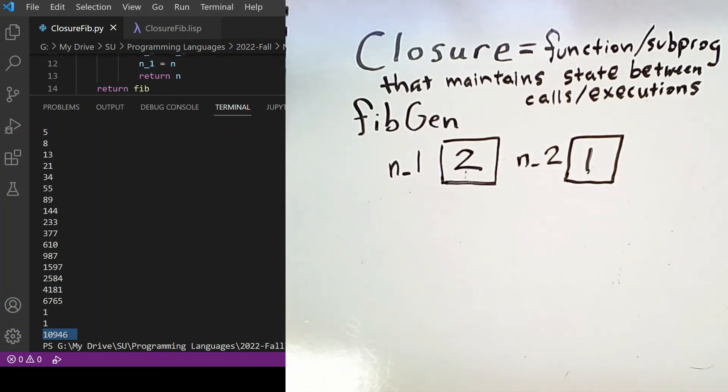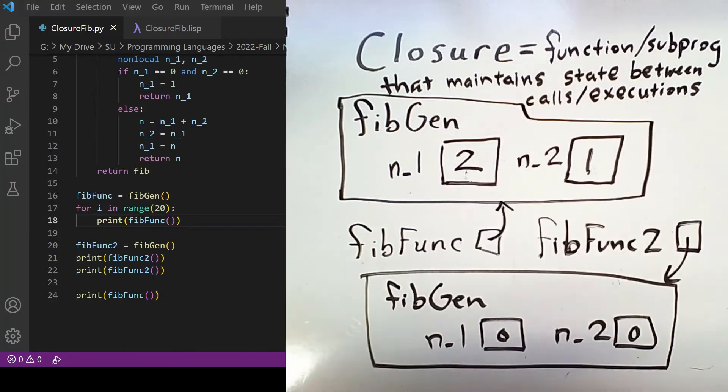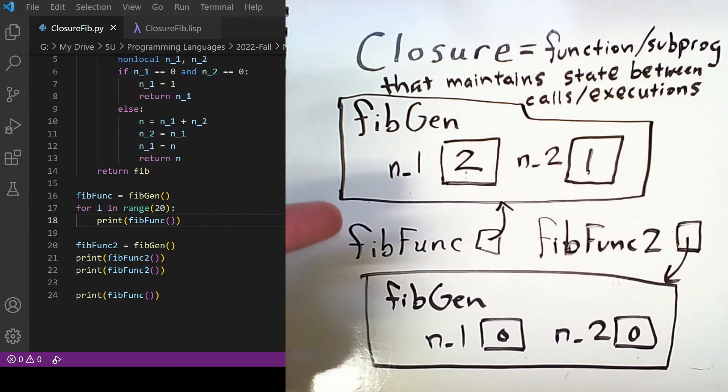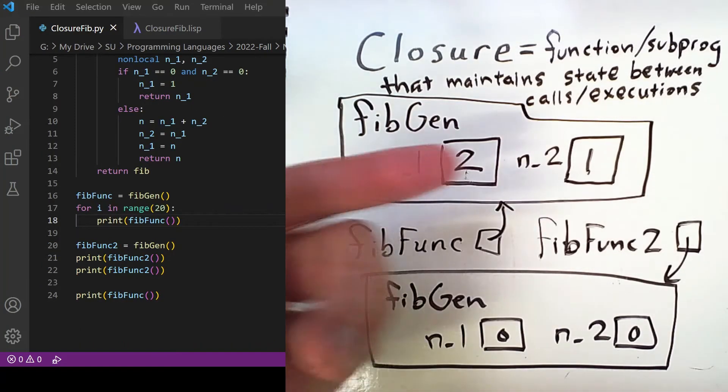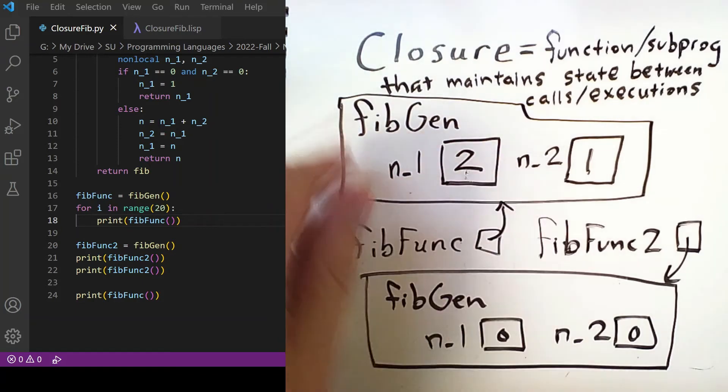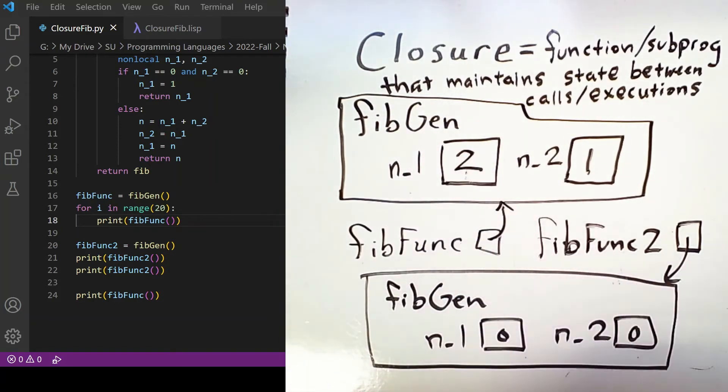So the reason that we can go back and forth between these sequences is that every time I call fibgen, I'm actually creating a new closure that maintains its state. So if I call fibfunc, it'll update the values of n1 and n2 inside of that particular closure. But if I call fibfunc2, it's updating n1 and n2 within a different closure that was generated with the same function.